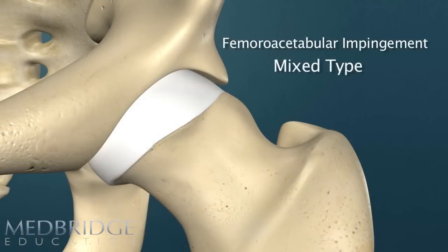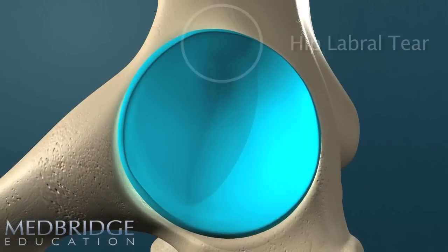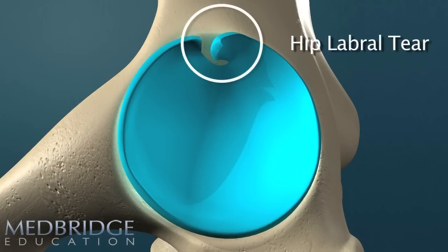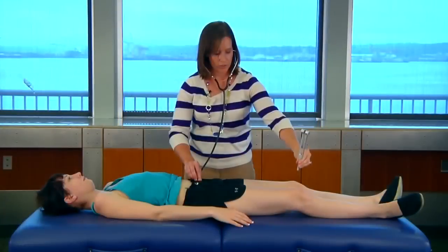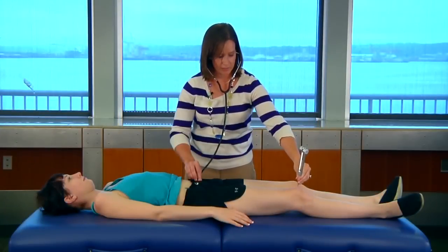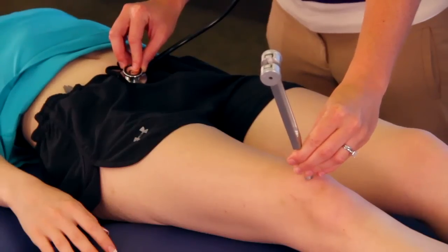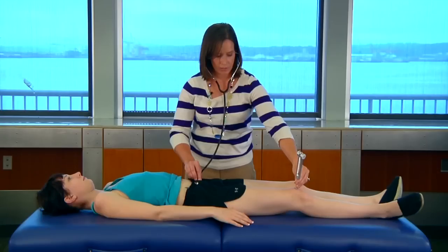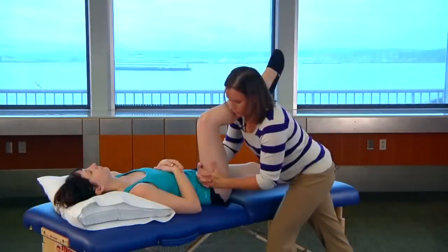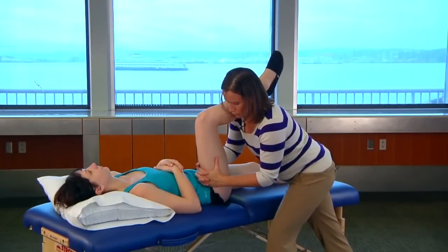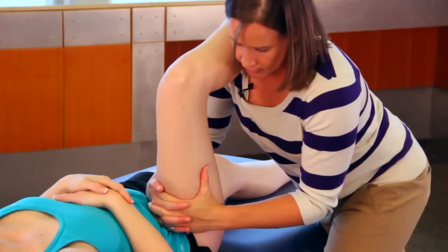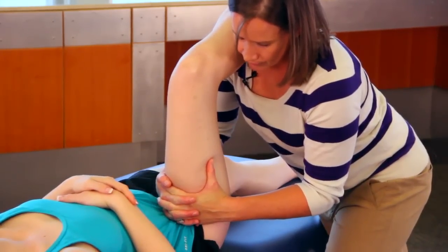In this course by Dr. Alexis Wright, users will evaluate the impact and prevalence of hip disorders, understand the imperative patient history elements of a hip examination, and identify which patient history components are associated with specific hip disorders. The most common forms of self-report outcome measures are presented along with their minimal clinically important difference scores.